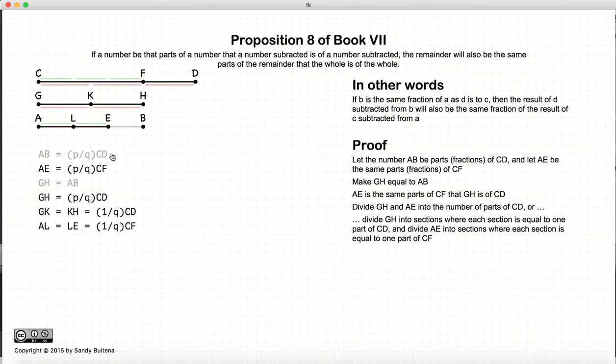Now what we're going to do is divide AE into the number of parts of CD. It's a little confusing, but what it basically means is that we are going to take whatever part of CF, so here I've shown the little parts that are green, and we're going to divide AE into those parts. So since this is 2 thirds, we're dividing it into 2.